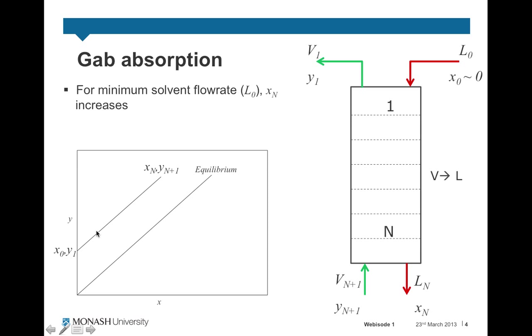So it's important to note the operating line always sits above the equilibrium line for gas absorption, but the top end of the operating line corresponds to the bottom of the column, and the bottom end of the operating line corresponds to the top of the column. This is the opposite to stripping.